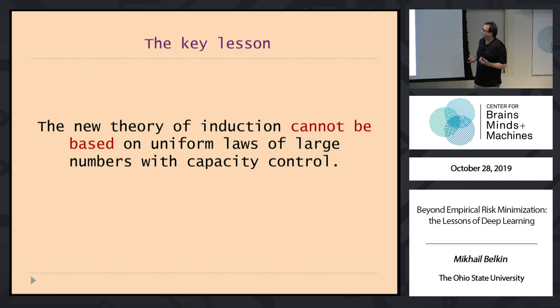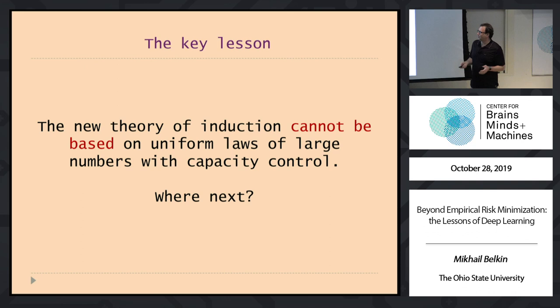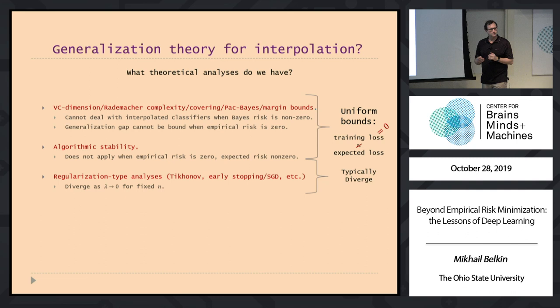Here is the first key lesson of deep learning: the new theory of induction cannot be based on uniform laws of large numbers with capacity control. Where shouldn't we go? Capacity control ideas don't really apply for that reason. Algorithmic stability is a slightly different version, but it has the same reliance on 'what you see is what you get' bounds, and the same exact argument applies.